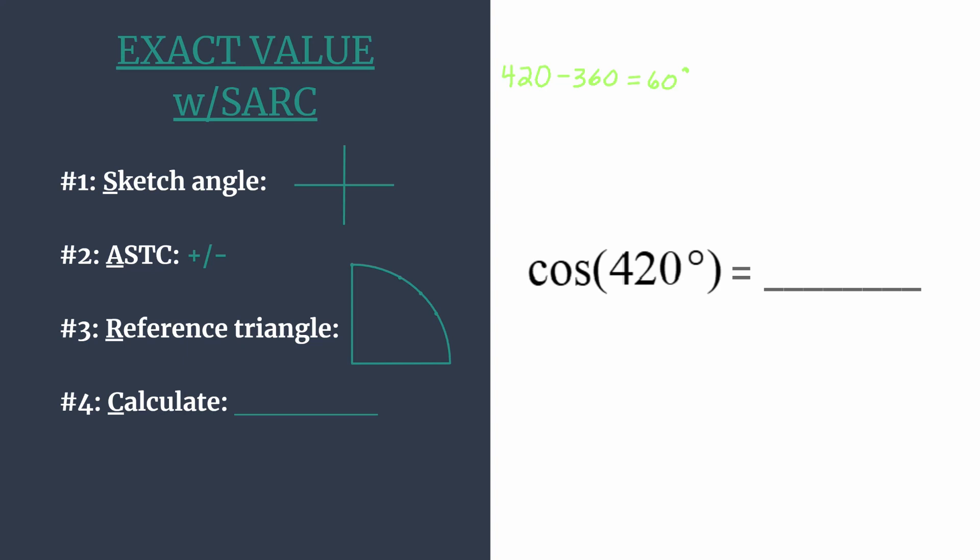We see 60 degrees is going to be coterminal to 420, or basically they share the same terminal side. So if we sketch the terminal side for 60, that's the same terminal side for 420. And as you can see 60 degrees is a lot easier to find. Here's zero, here's 90, so 60 must be right about here. The terminal side is in quadrant one. This is the same terminal side for 420. You just rotated an extra counterclockwise rotation if you wanted to sketch it as 420.